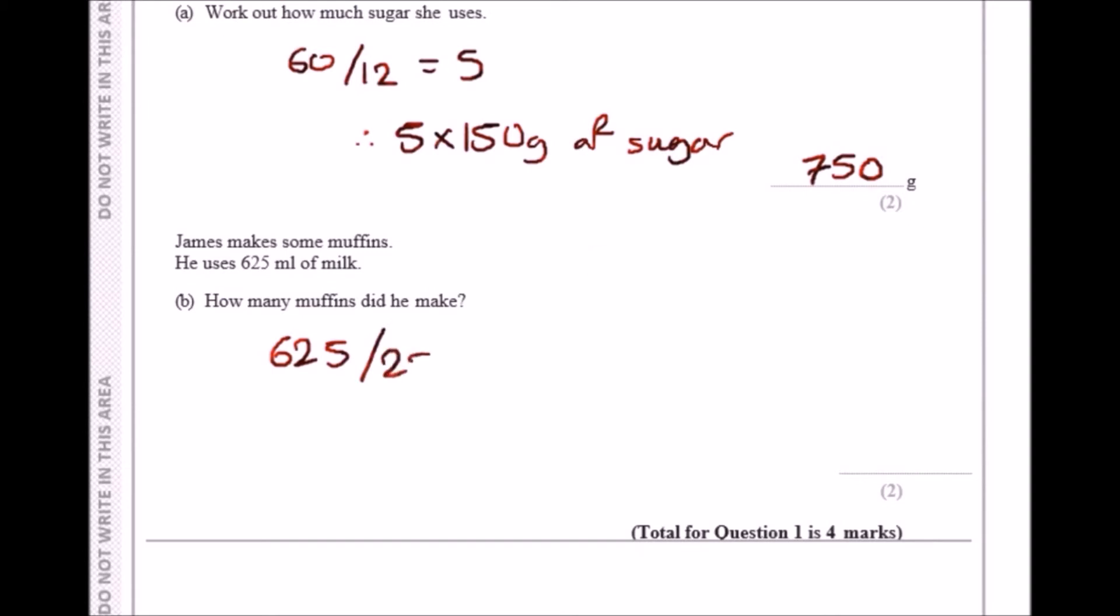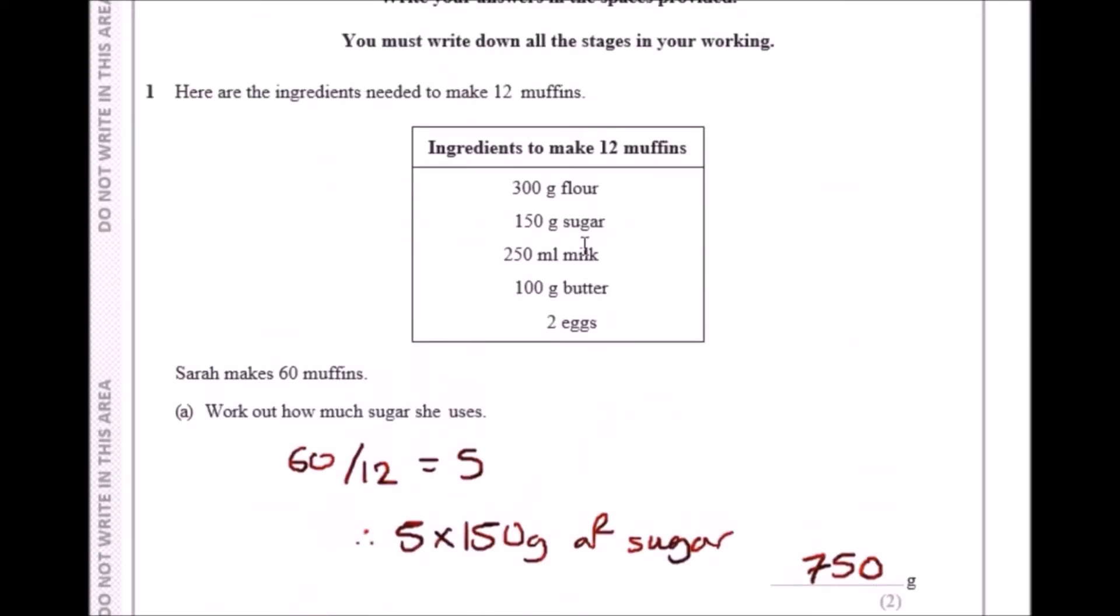Dividing it in the calculator, you should get exactly 2.5 times. He needs 2.5 times the quantity required. Because it's 12 per 250 milliliters of milk, he needs to do 12 times 2.5 to get the total number of muffins.